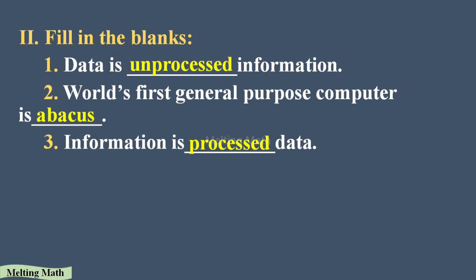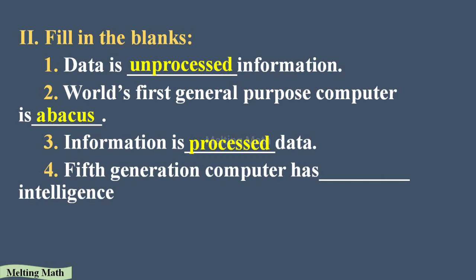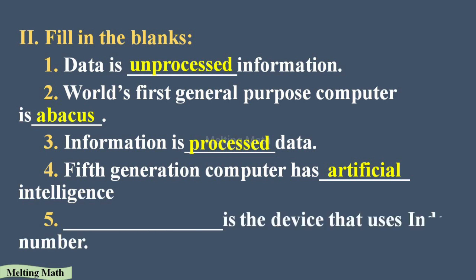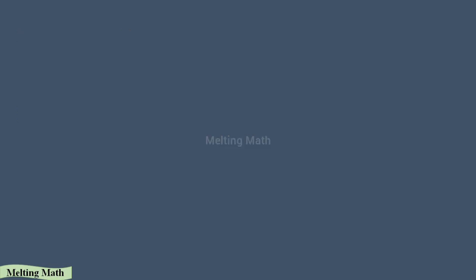Fourth: fifth generation computers use __ intelligence. That is artificial intelligence. Fifth: __ is a device that uses index numbers. An analog computer uses index numbers.